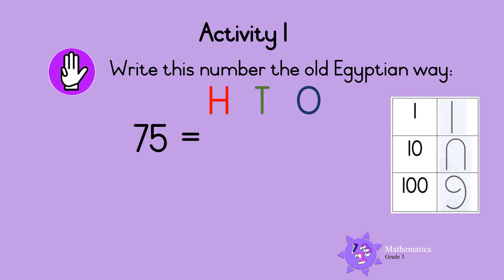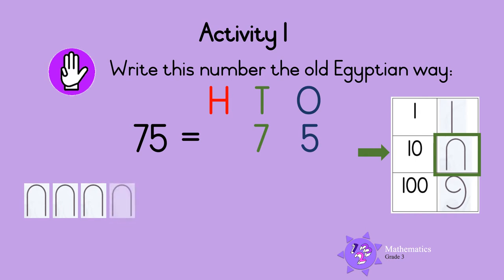Write this number the old Egyptian way: the number 75. The number 75 has seven tens and five ones. Here is the symbol used for 10 in old Egyptian. Seven tens make 70, so we need seven of these symbols: one, two, three, four, five, six, seven. These symbols give us the number 70. We still need five ones.